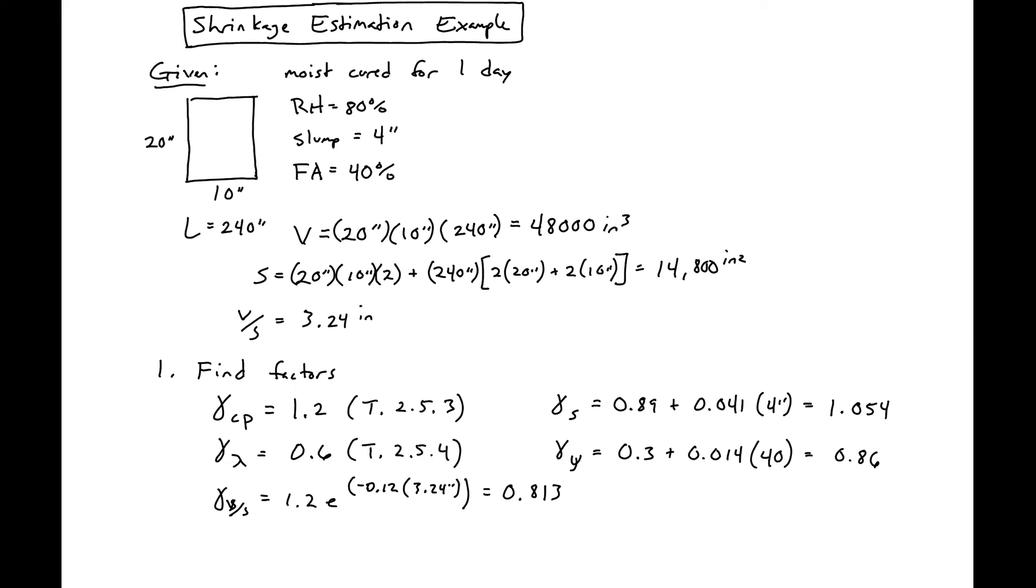The strain at ultimate equals all of our factors: the factor for curing, relative humidity, volume to surface area ratio, slump, and fine aggregates, all multiplied together times 780 microstrain.